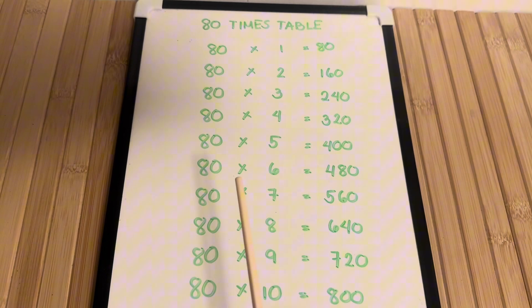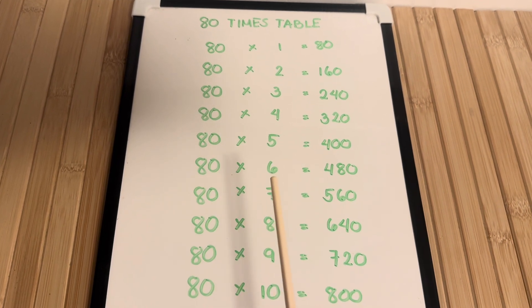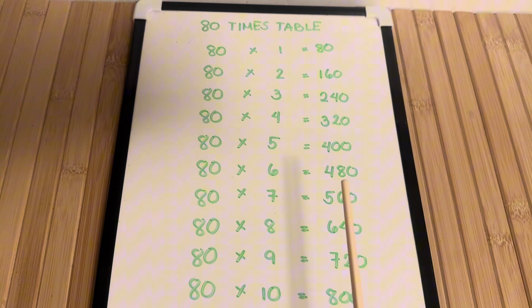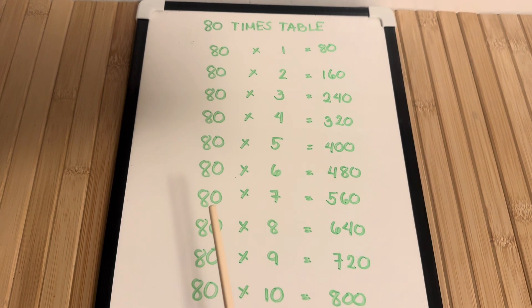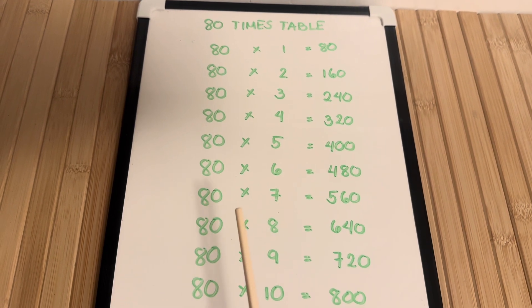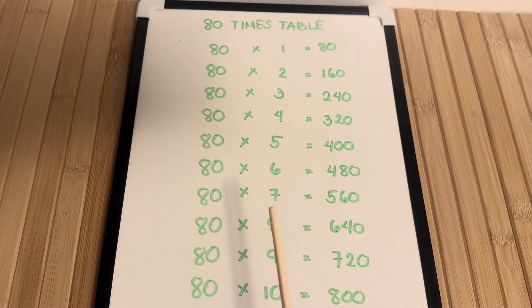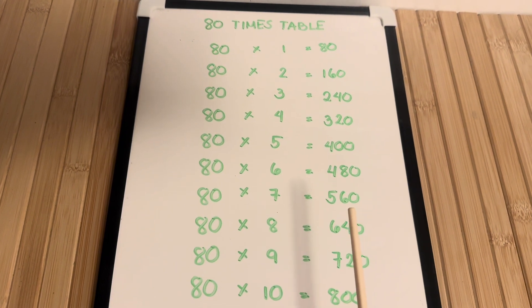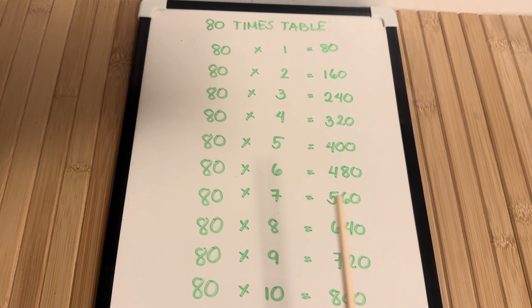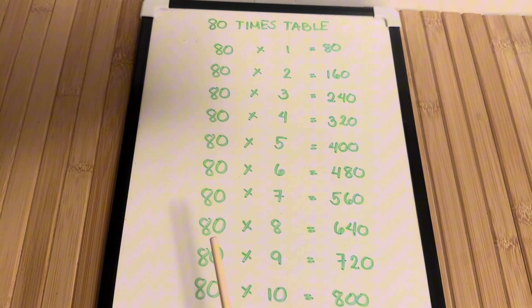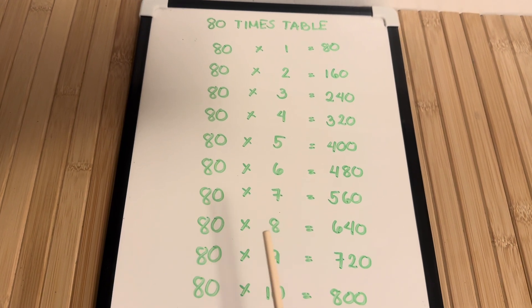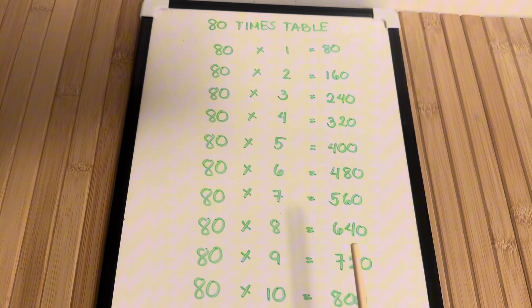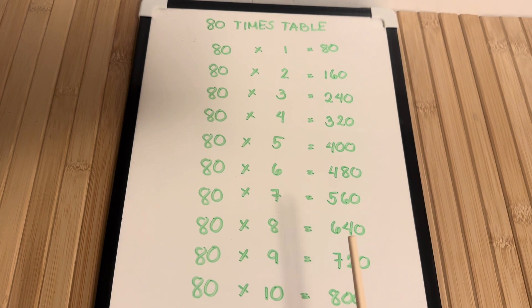80 times 6 is equals to 480. 80 times 7 is equals to 560. 80 times 8 is equals to 660.